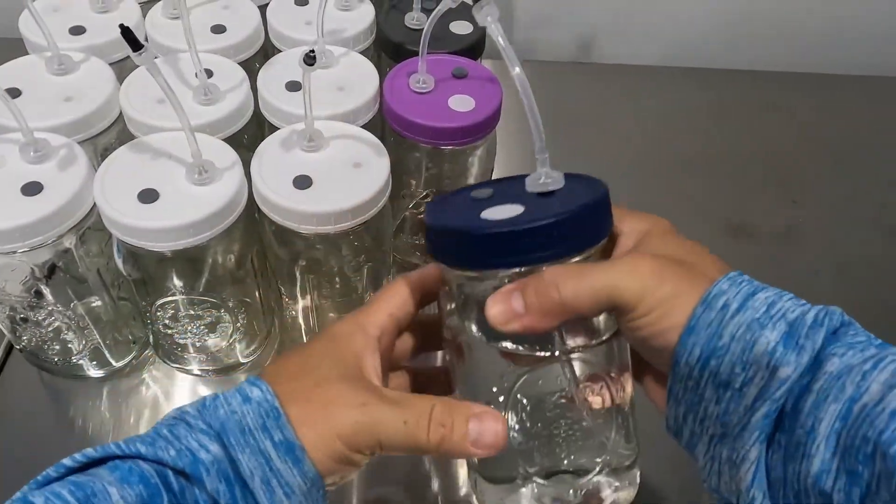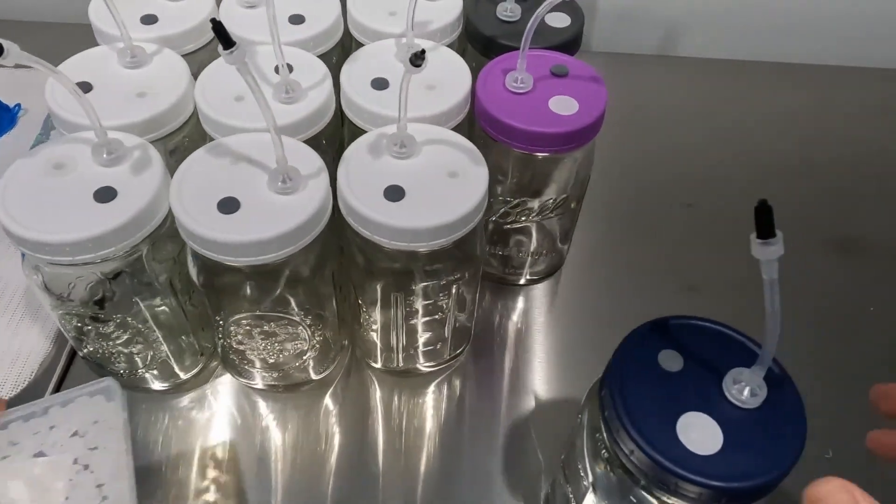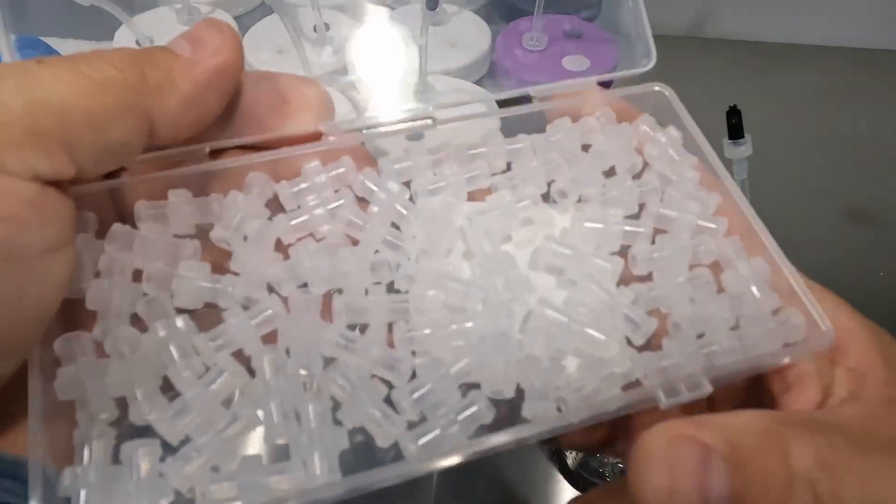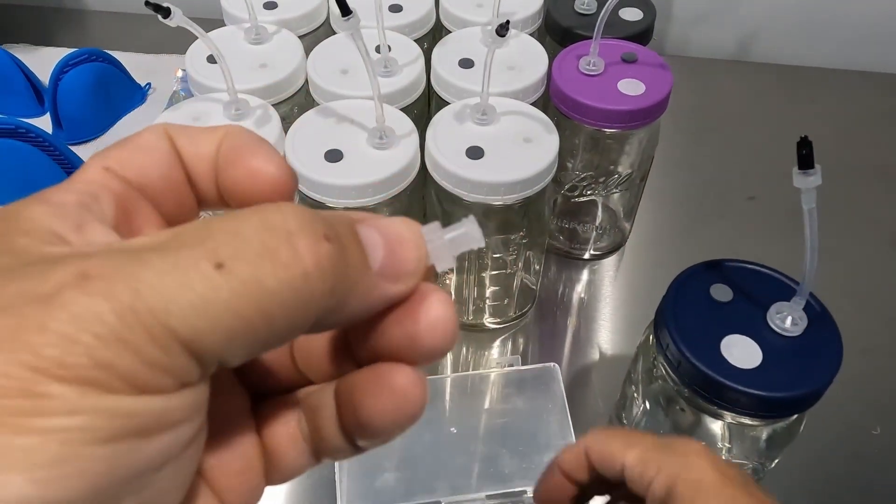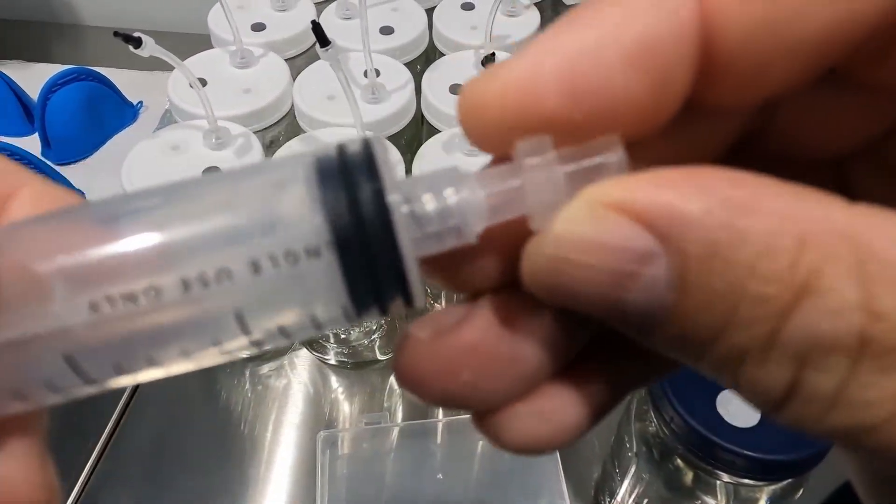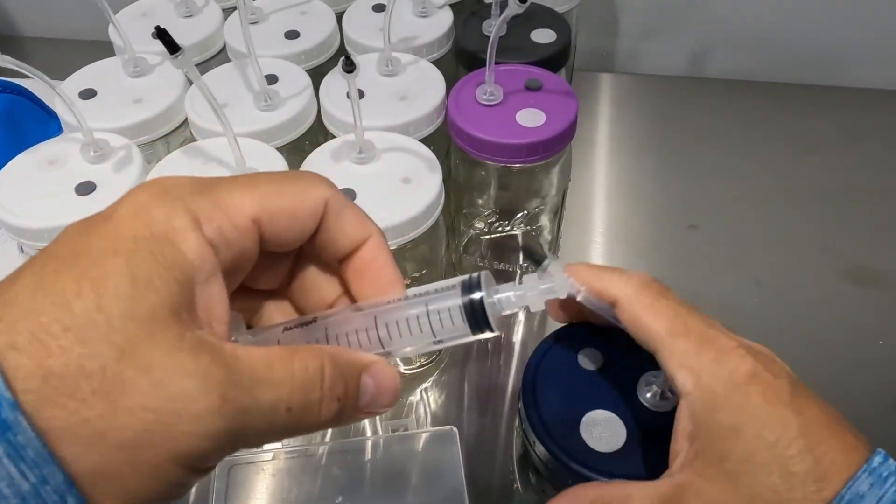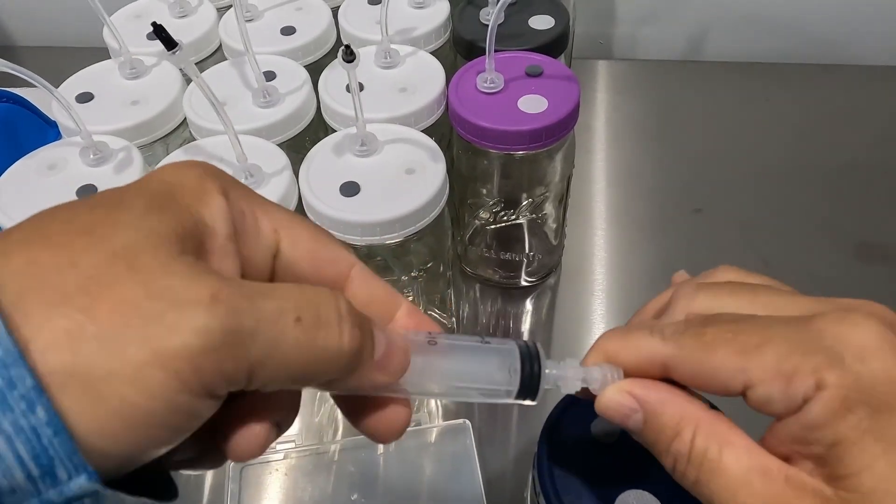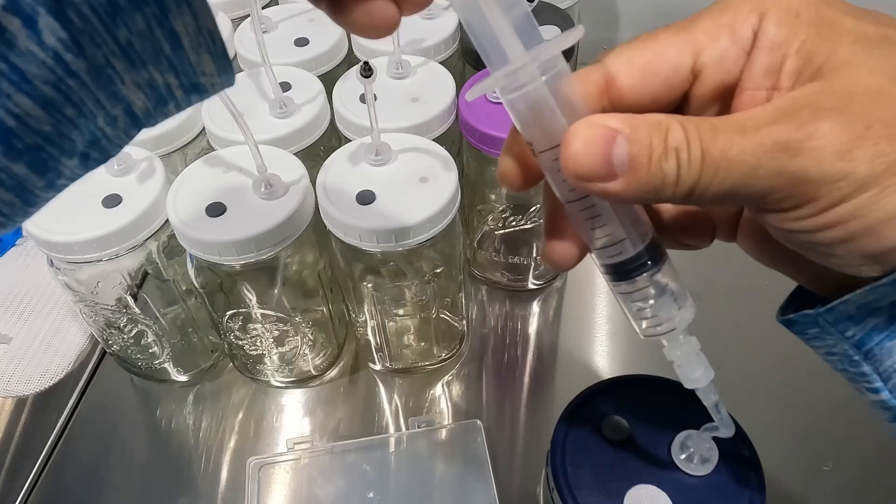Now here's one that I put some water in just to show you how we would actually use it. We have these luer lock couplings and what these enable you to do is essentially connect two syringes one to the other. Now in this case, we're going to use it to connect to the syringe, whether it's a 10 milliliter, 20, whatever size you prefer, and then connect that onto that port after removing the cap. And then you can easily extract liquid.